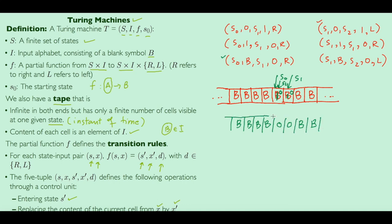So what this Turing machine does is change two consecutive blanks into 0s and does not touch any other blanks. This was a small introduction to Turing machines — the definition, how they operate, how to describe them using a set of five-tuples, and given a starting tape condition, what the final tape will look like after the machine is applied. That's it for this video — hope it was easy to understand.